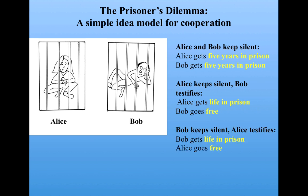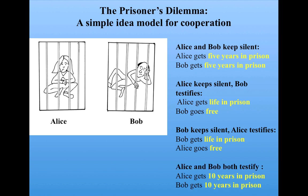If Bob keeps silent but Alice testifies, he gets life in prison and Alice goes free. Now if they both testify against each other, they're each going to get ten years in prison. They're both offered the exact same deal. With no communication, they have to decide what to do — should they stay silent or testify?